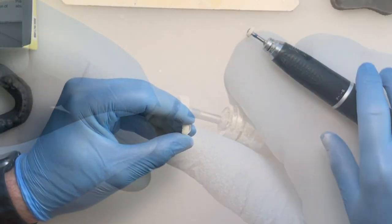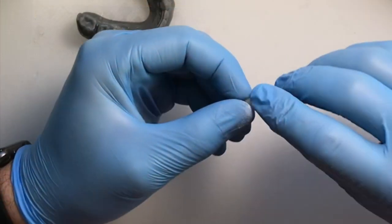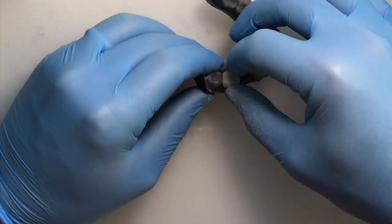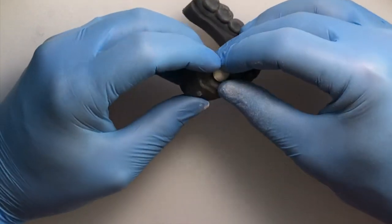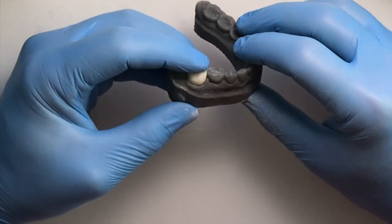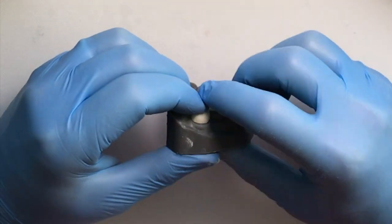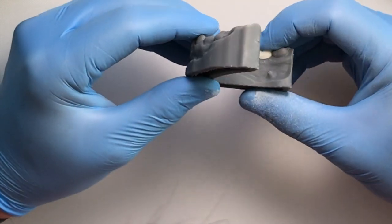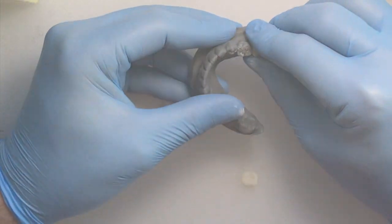Once you've got that completed, I will always marginate my crowns. First, I'll check it just to verify that I've seated it all the way, that we're close to a good replica of what a provisional should look like.